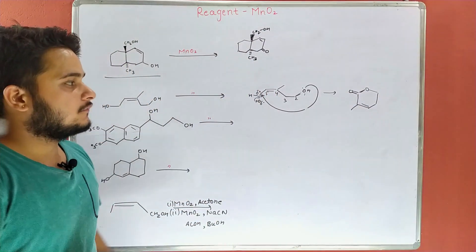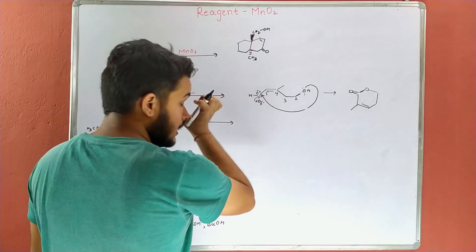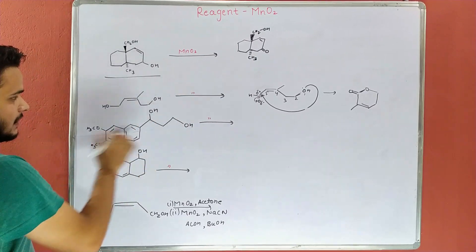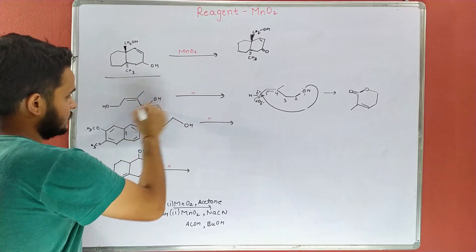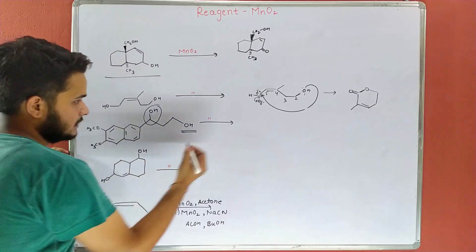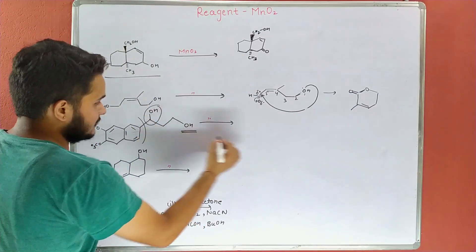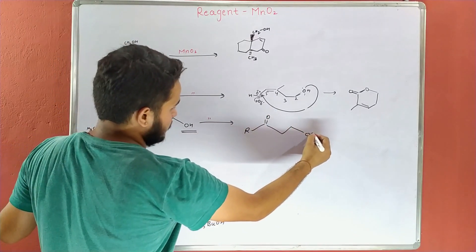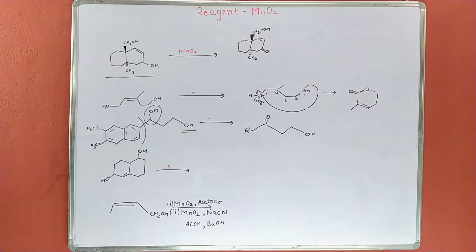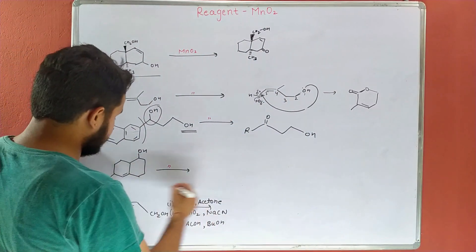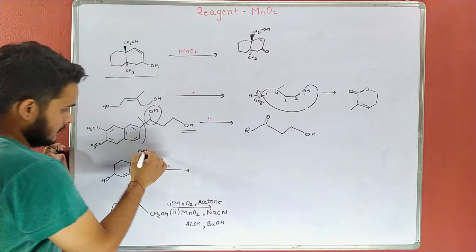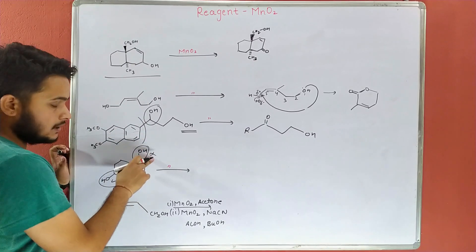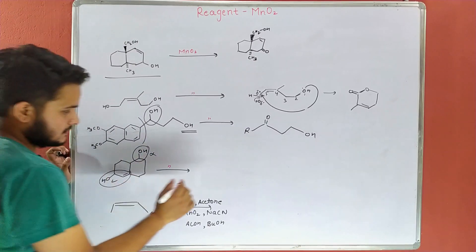यहाँ double bond O आएगा — so this is our final product। Next: MnO2 के साथ reaction — this is our benzylic alcohol। सिर्फ इसका oxidation होगा, इसका नहीं। तो R लिख देते हैं — double bond O बन जाएगा और यह OH रहेगा। अगले question में एक alcohol allylic है और एक non-allylic — तो सिर्फ allylic का oxidation होगा — double bond O बनेगा।